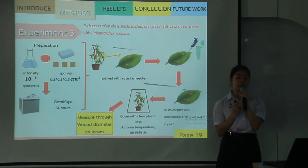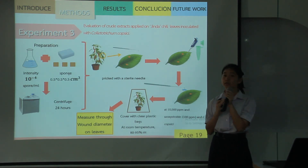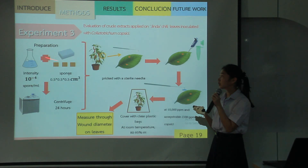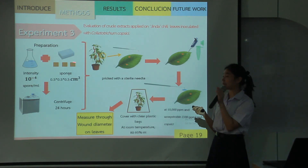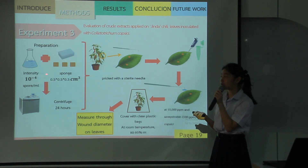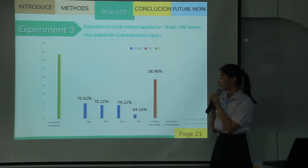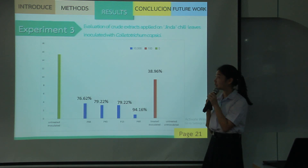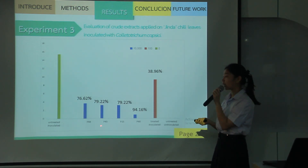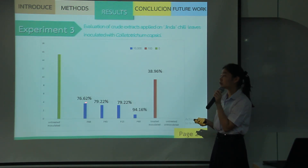Experiment 3: evaluation of extract applied on Jida chili leaf, inoculated with Colletotrichum capsicum. This experiment is done similarly to the chili fruit, but the preparation of the inoculum is different — the inoculum has to be placed on a sponge so it can be applied to the chili leaf more easily. From the graph, P63 inhibits fungal lesion development at 94.16%, P15 and P45 at 79.22%, and P44 at 76.62%.